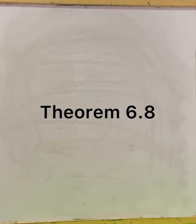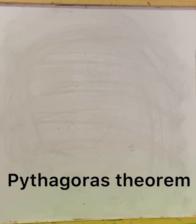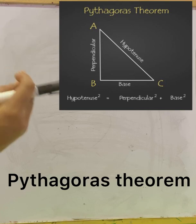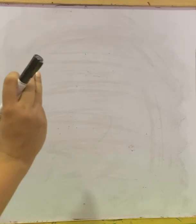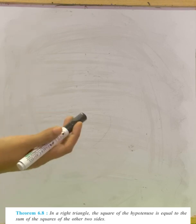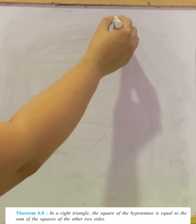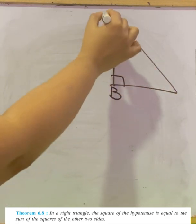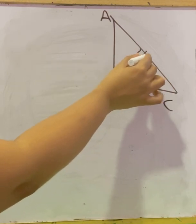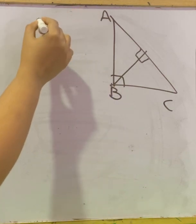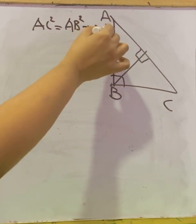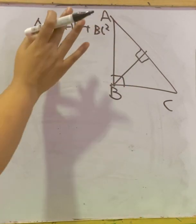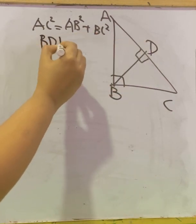Next is Theorem 6.8. We have already learned the Pythagoras theorem, related to right triangles — hypotenuse squared equals base squared plus altitude squared. We proved it in previous classes, but now we are trying to prove it using similar triangles. The statement is: in a right triangle, the square of the hypotenuse is equal to the sum of the squares of the other two sides. We need to prove that AC² = AB² + BC², and we have drawn BD perpendicular to AC.